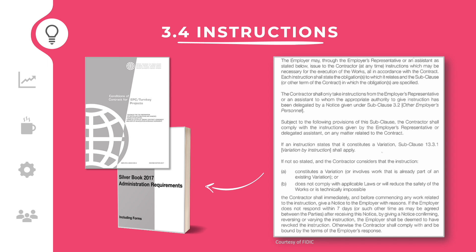Be aware that only an authorized employer's representative or an assistant with the appropriate authority can issue instructions. The contractor shall comply with an instruction. The employer's representative can instruct a variation. The contractor shall immediately notify the employer's representative if they believe that the instruction constitutes a variation or they have other objections. If the employer's representative does not respond within seven days, then the instruction is deemed to be revoked.